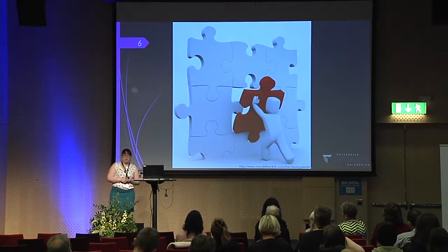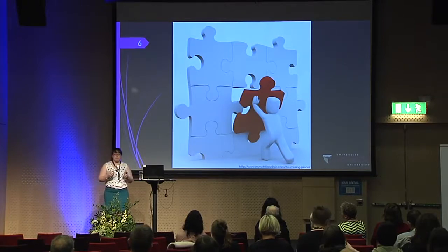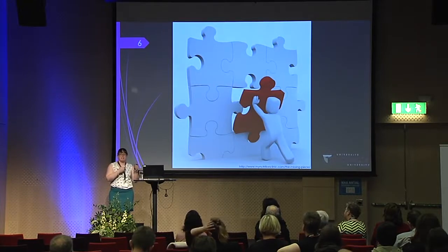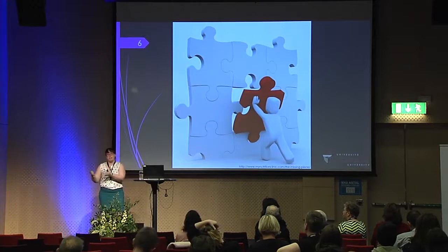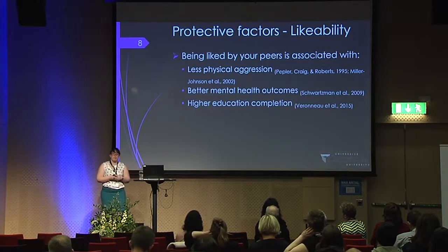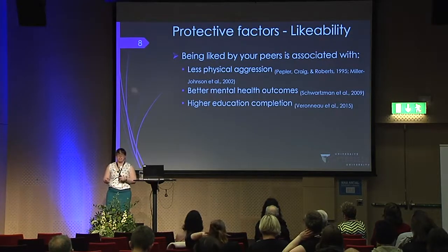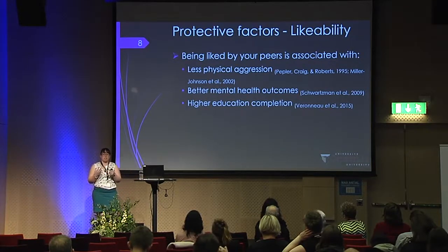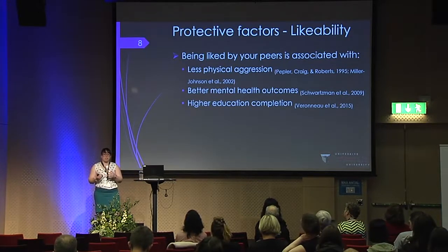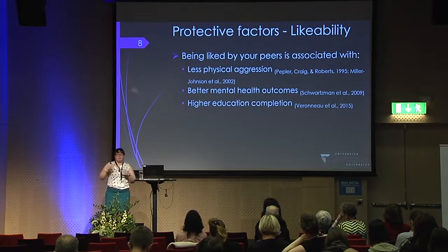But that's not the whole picture. The Bronfenbrenner model reminds us that there are both protective factors and risk factors. My question today asks why it is that some aggressive children go one route and other aggressive children go a more positive route. In terms of protective factors at the peer level, I'm looking at likability. Being liked by your peers has positive outcomes, including association with less physical aggression, better mental health outcomes, and more years of schooling.